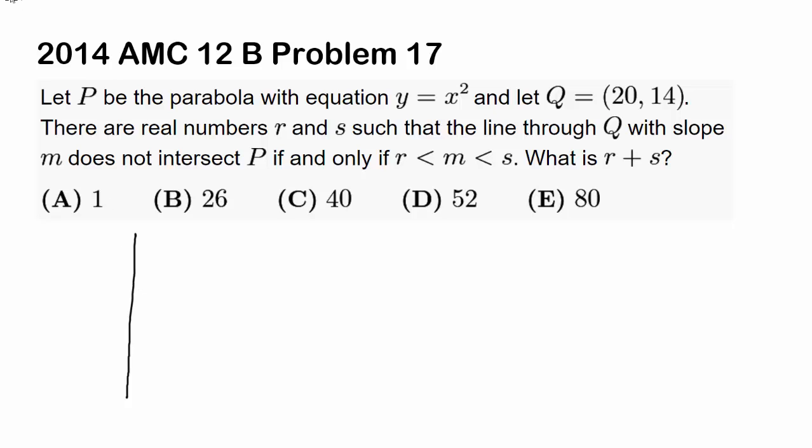Let's draw our parabola y equals x squared which goes like this. And our point is (20, 14). For our parabola, when we put 20 in, we get 400 or 20 squared. So 14 is going to be below the parabola. So our point is going to be like this.